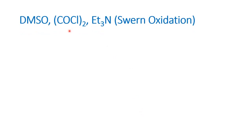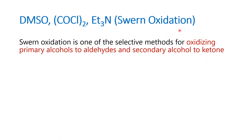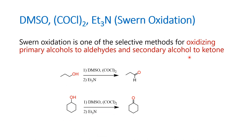Next, DMSO, COCl2, triethylamine — this combination of reagents is used in what is called Swern oxidation. This is also an oxidizing agent and it is a named reaction. Swern oxidation is a mild oxidizing agent wherein you do not want to convert a primary alcohol to a carboxylic acid — you want to stop the reaction at the aldehyde stage. Using DMSO and COCl2, it is easy to convert a primary alcohol to an aldehyde and a secondary alcohol to a ketone and stop the reaction there. The reaction will not proceed further to carboxylic acid.